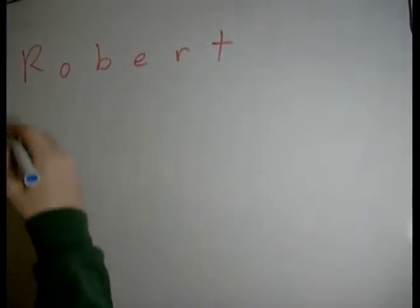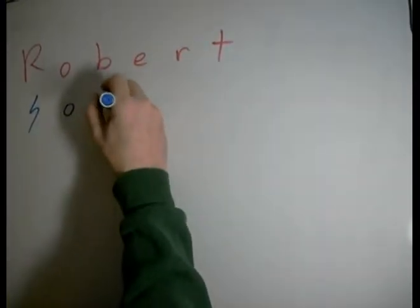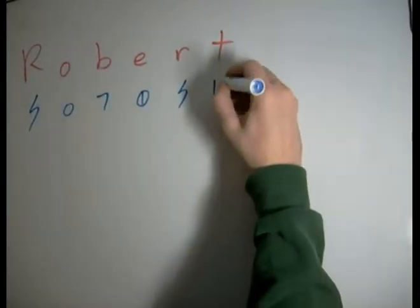Okay, let's do the name Robert in D-script. Well, first we'll grab the D-script letters: R, O, B, E, R, and T.